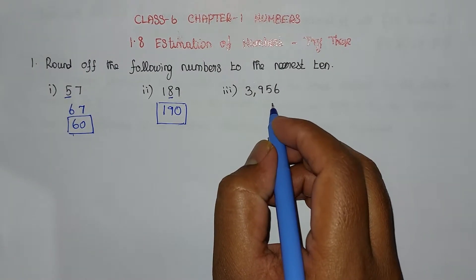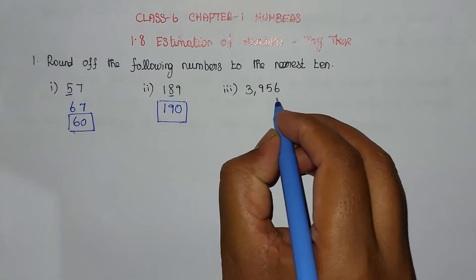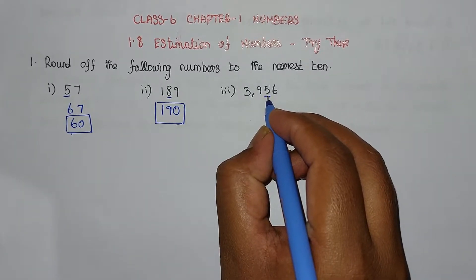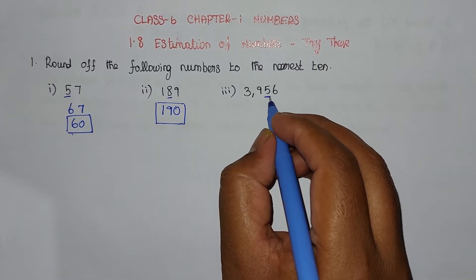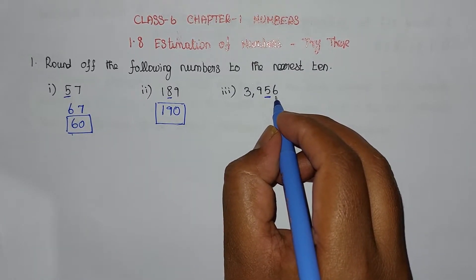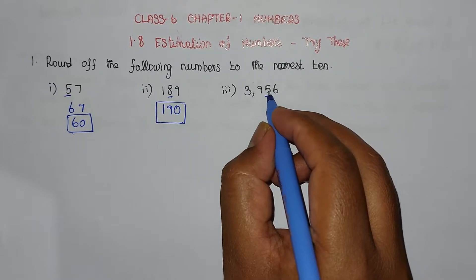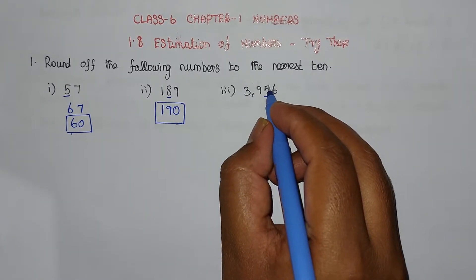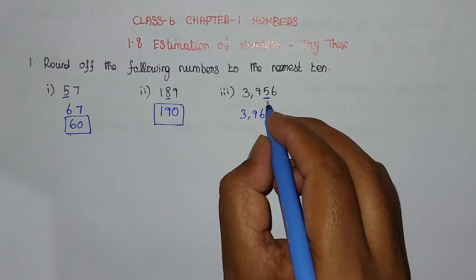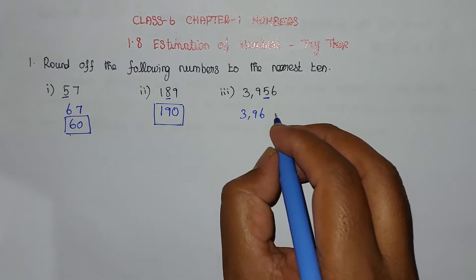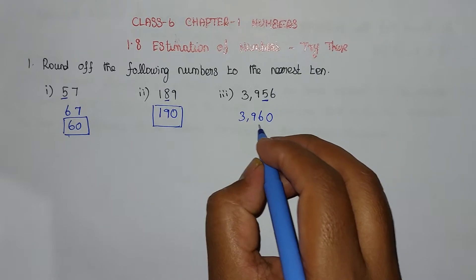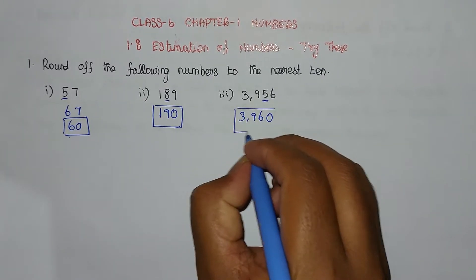The third problem: find the nearest 10 value. Looking at the 10s position, the digit is 5. The right-hand side digit is greater than 5, so the 10s digit becomes 5 plus 1 equals 6. The answer is 3,960.